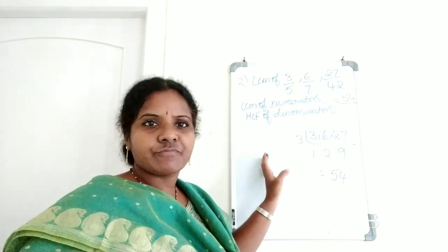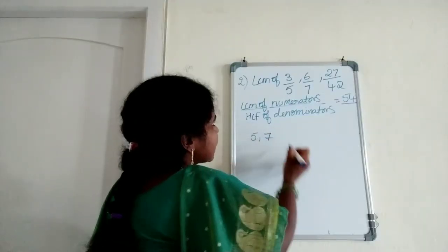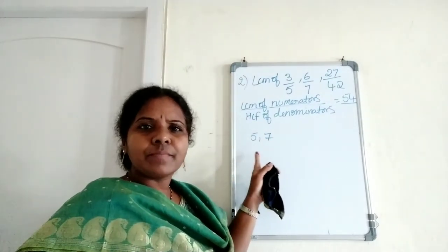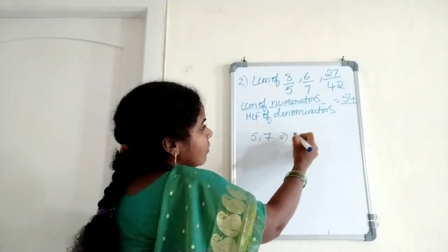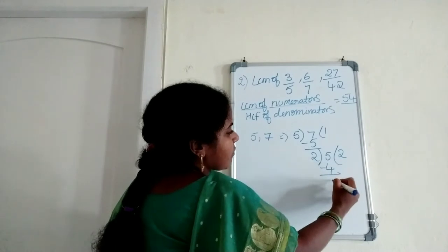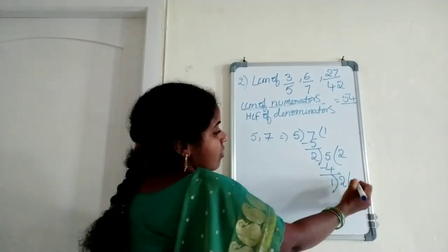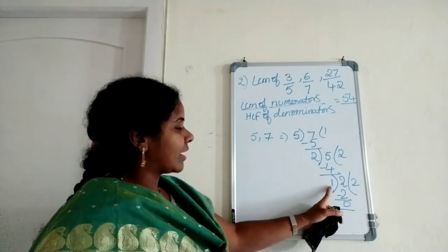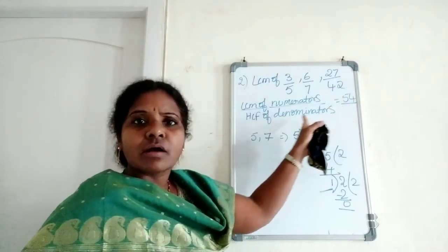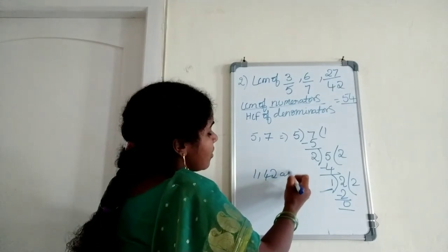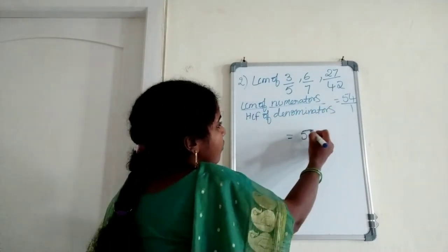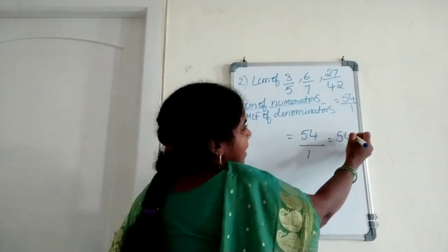Now find HCF of the denominators 5, 7, and 42. First, HCF of 5 and 7: these are co-prime numbers, so HCF is 1. Then HCF of 1 and 42 is also 1. So HCF of denominators is 1. Our answer is LCM of numerators over HCF of denominators = 54/1 = 54.